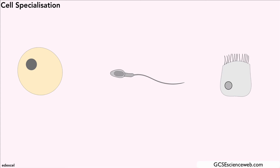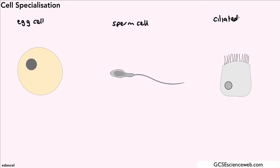Hello, welcome to this short video for Edexcel GCSE Science and Biology. We're going to look at cell specialization and there are three particular cells we're going to look at: egg cells, sperm cells, and what we call ciliated epithelial cells. There is a diagram of each one of those cells on the screen in front of you.